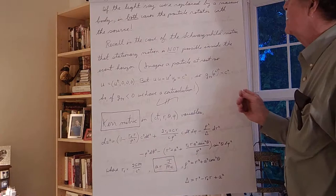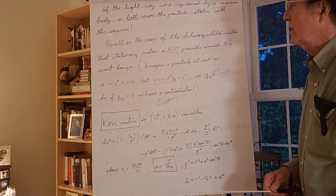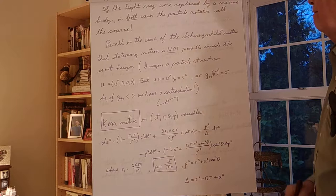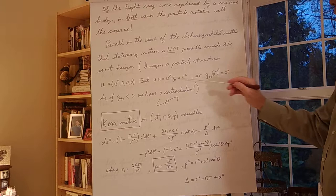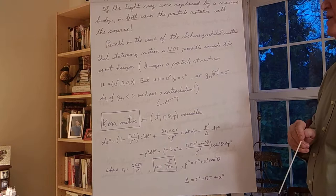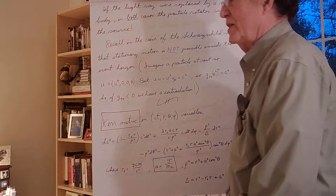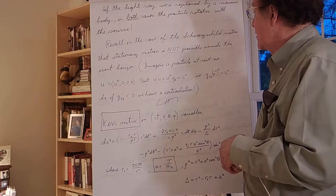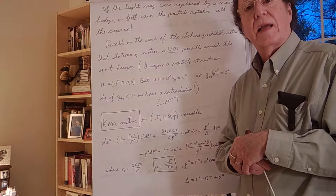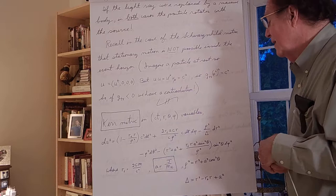This reminds us that inside the Schwarzschild event horizon, stationary motion is not possible. Here's a simple way to see it: imagine a particle at rest, so U equals U^t only. The normalization condition gives g_tt (U^t)^2 equals c^2. But inside the event horizon, g_tt is negative — a contradiction. Stationary motion is simply not possible there. This is related to the fact that timelike and spacelike intervals switch inside the event horizon, which was crucial for understanding why particles can never escape from inside the Schwarzschild radius.